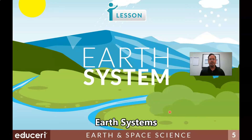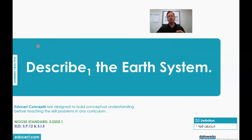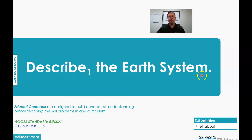Today's lesson is Earth System. This is an Earth and Space Science lesson. Students, this is our learning objective. Please follow along while I read it: Describe the Earth System. Your turn — Describe the Earth System. Describe means to tell about. So we are going to tell about the Earth System.